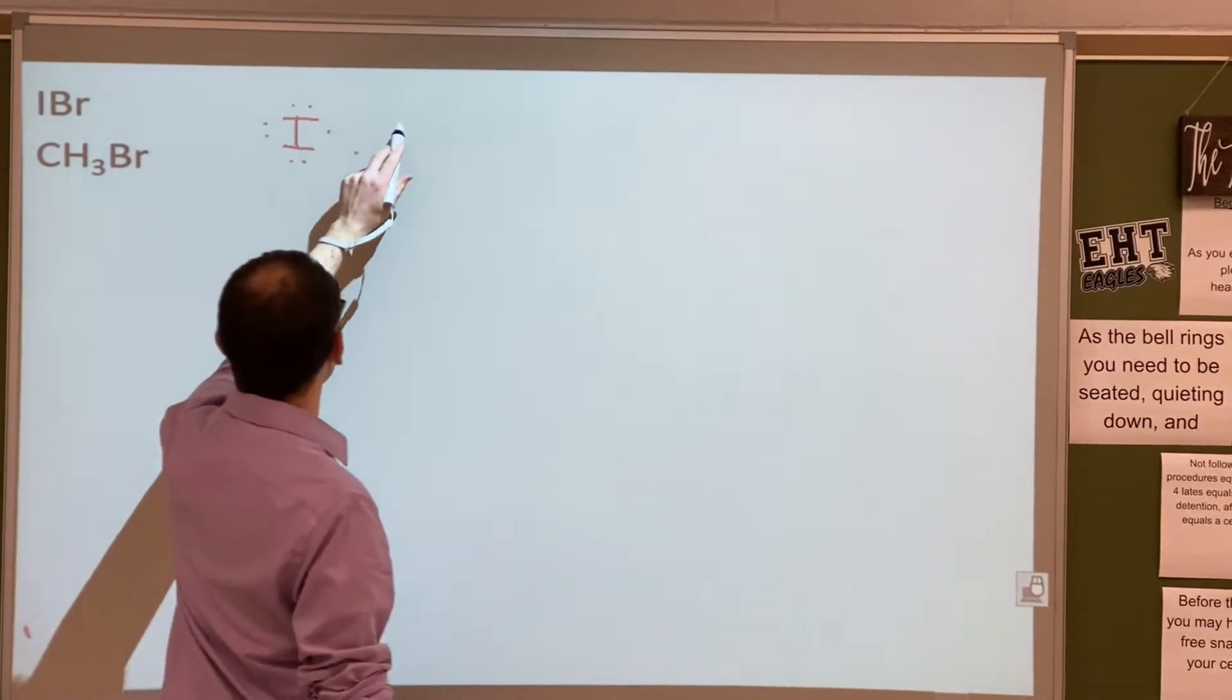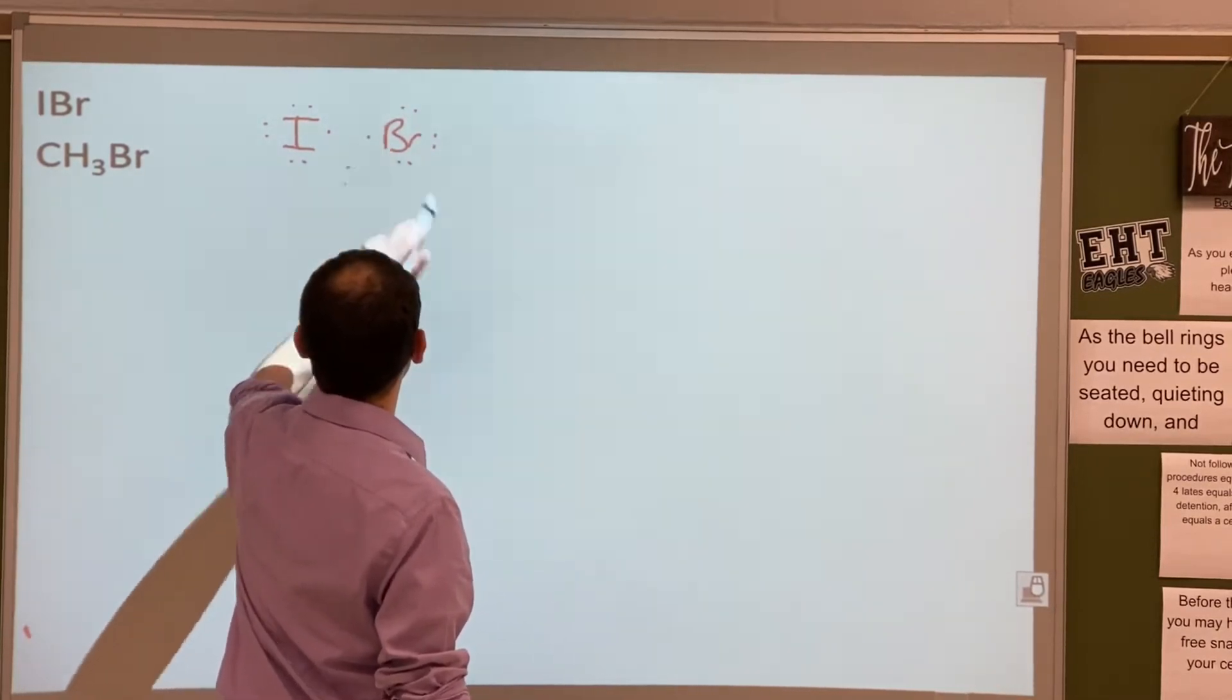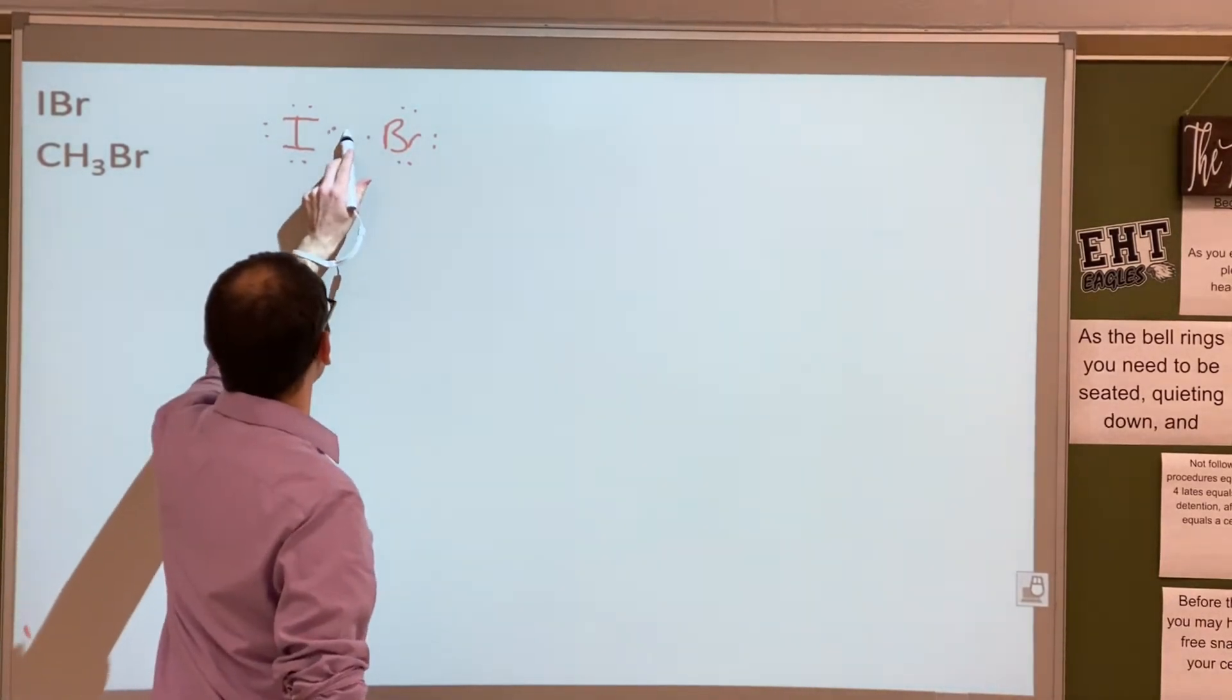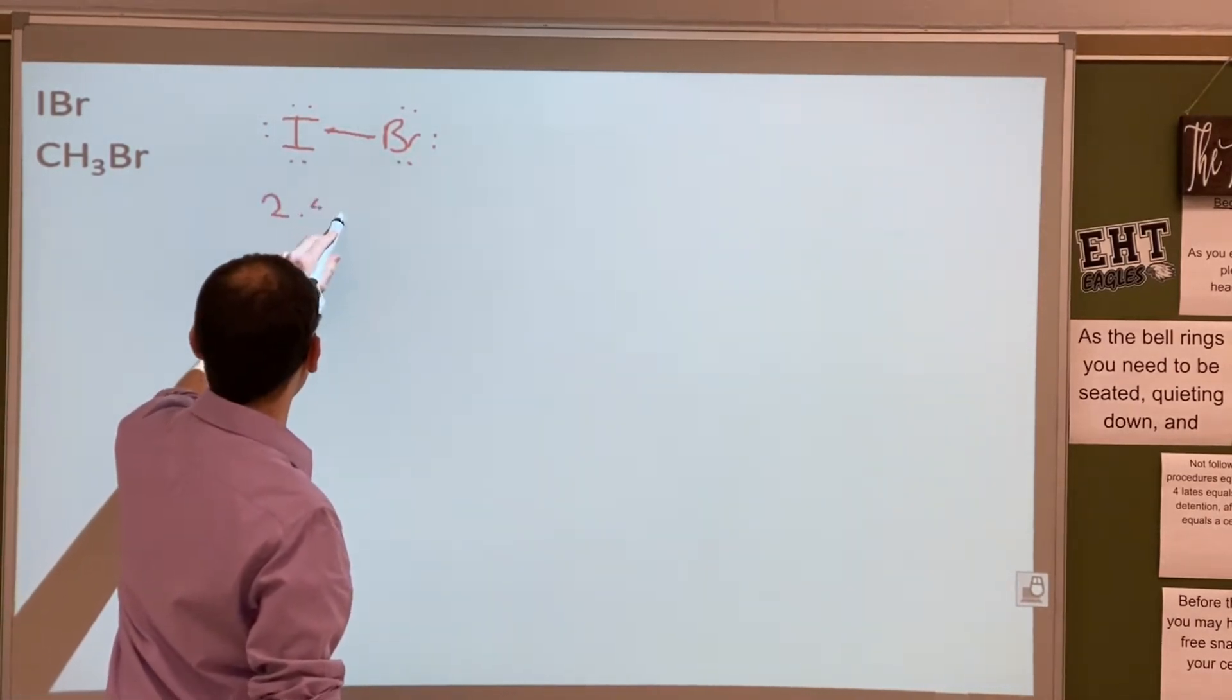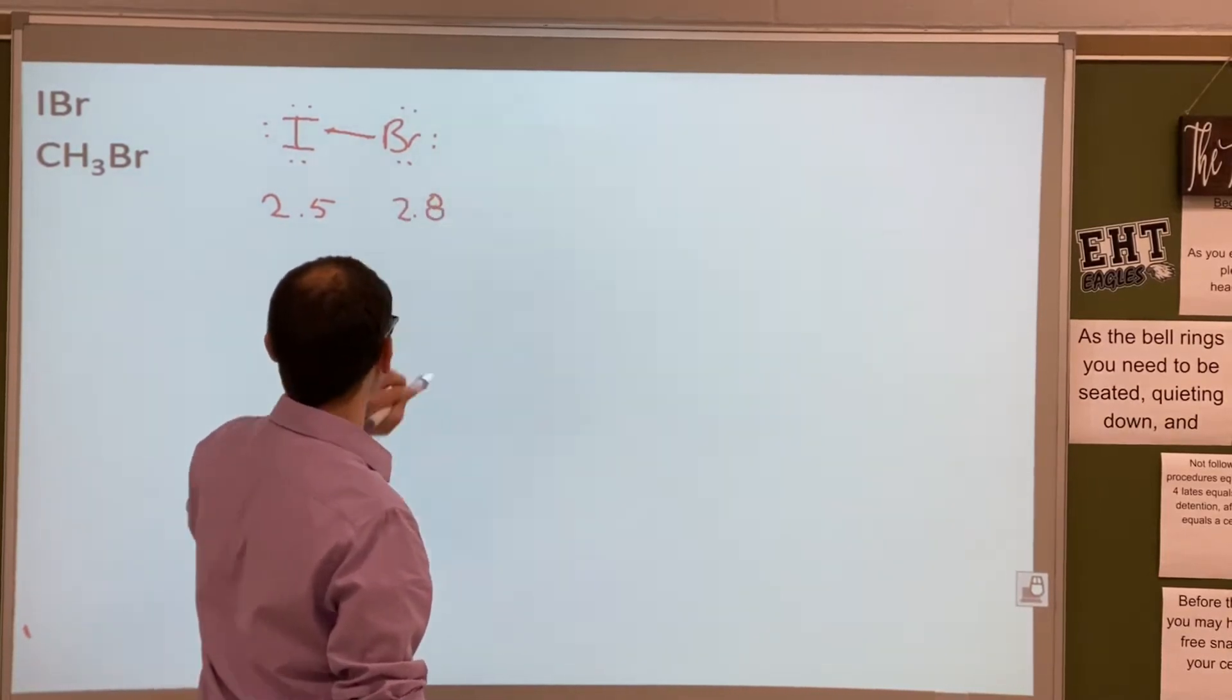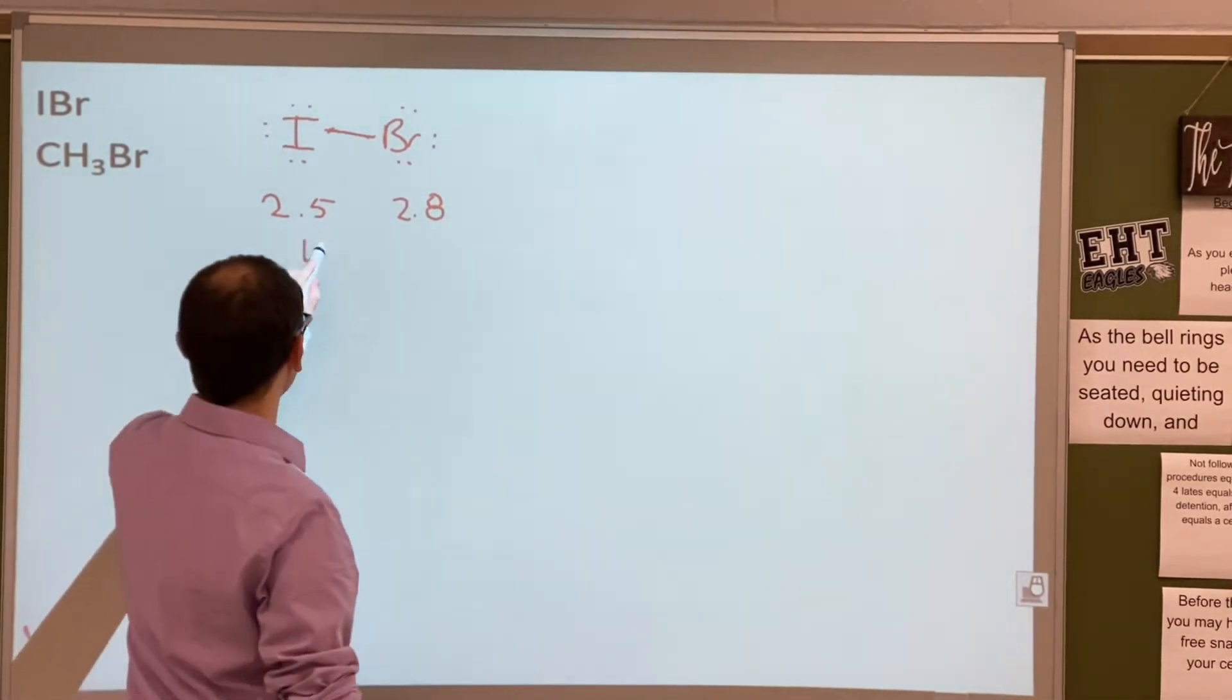Iodine looks like this, bromine looks like that, and we just make a connection between the two. What's iodine's electronegativity? 2.5. And then bromine is 2.8. We subtract, we get 0.3, right? Non-polar, first thing we found out.